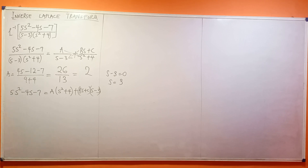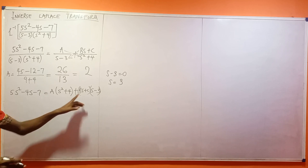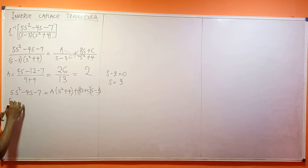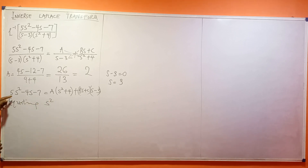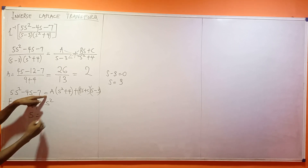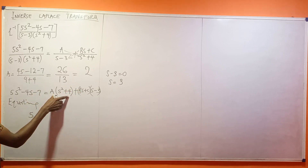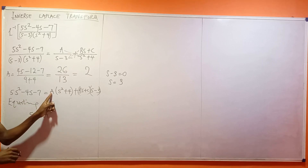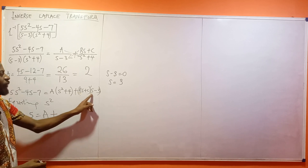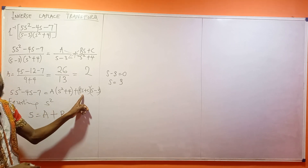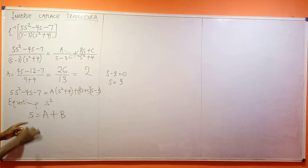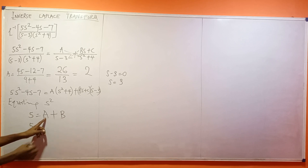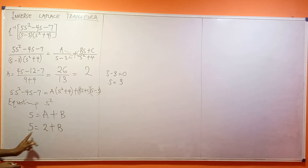To find B, I'm going to equate all the s² terms. The s² coefficient on the left is 5. Expanding the right side: A times s² gives A, and Bs times s gives Bs². So equating s² terms: 5 equals A plus B. Since A is 2, we have 2 plus B equals 5, therefore B equals 3.